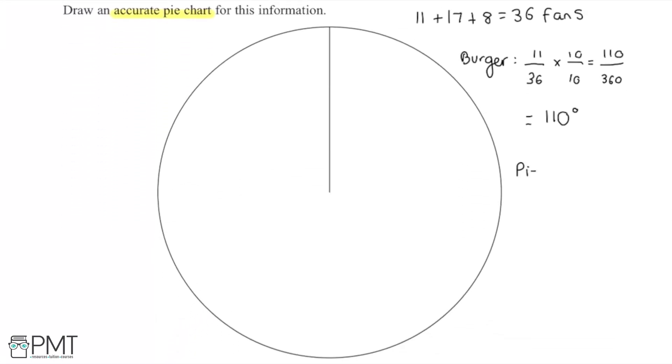Similarly pie we can do the same again so 17 this time over 36 because there's 17 fans that chose the pie, multiply that by 10 over 10 gives us 170 over 360 so that's going to be a 170 degree angle. And then finally for the hot dog we have 8 people out of the 36 and we can times that by 10 over 10 to give 80 over 360 so this gives us an 80 degree angle.